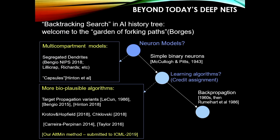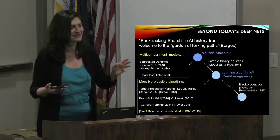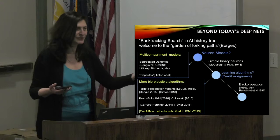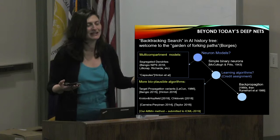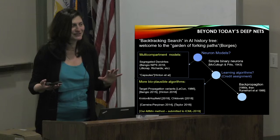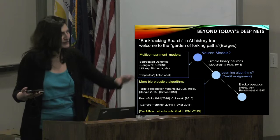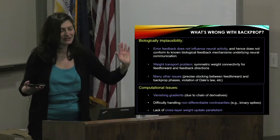Yann LeCun proposed target propagation as far back as his 1986 thesis, but it never worked as well as backpropagation. More recently, Joshua Bengio tried difference target propagation with a 2015 paper, and Hinton evaluated different flavors at NIPS, but the conclusion so far is that it doesn't work as well as backpropagation. People keep trying because backpropagation has issues that could be improved, and biological plausibility might be the key.